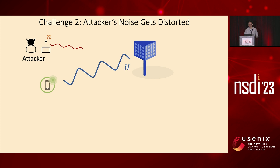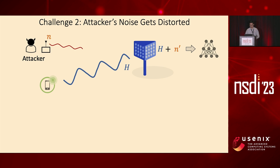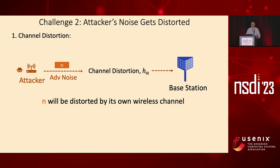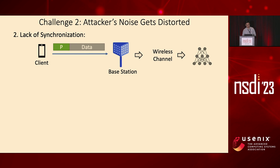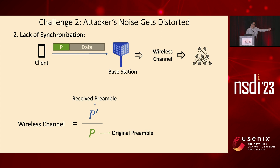The second challenge is that the attacker's noise will get distorted when it actually gets transmitted, and when it reaches the base station it will no longer be n, but n prime. This distortion is triggered by two factors. The first factor is channel distortion of the attacker itself — when the attacker transmits this noise, it goes through the wireless environment and gets distorted by its own wireless channel, denoted as H_UA. The second factor is due to lack of synchronization. When clients transmit data to the base station, they attach a preamble in front of the data symbol so the base station can extract the wireless channel by analyzing the distortion in this preamble. Since the channel solely relies on this preamble distortion, we only want to attack the preamble.